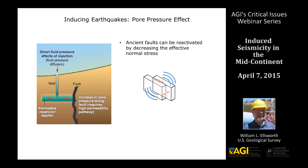The pore pressure effect is probably the most important mechanism behind the rise of seismicity we've seen across the mid-continent. When we inject fluid underground, it displaces water already in the pore spaces, causing pore pressure to increase, often at great distance from the injection point. If that increase reaches an ancient fault, it can decrease the normal stress, weaken the friction, and allow the fault to come to failure. Mathematically, the critical shear stress equals the coefficient of friction times the effective normal stress — the normal clamping stress in the Earth — minus the pore pressure.